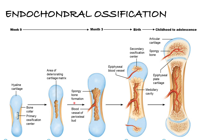At the primary ossification center, this is the first place we're going to start seeing bone forming around the diaphysis. The diaphysis is the shaft of the bone. We're going to see this around the diaphysis of the hyaline cartilage model — a mold that gives us the shape of what the bone will look like. We use endochondral ossification to make our long bones, like the bones of your legs and thighs.